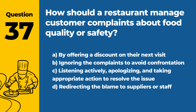Question 37: How should a restaurant manage customer complaints about food quality or safety? a. By offering a discount on their next visit. b. Ignoring the complaints to avoid confrontation. c. Listening actively, apologizing, and taking appropriate action to resolve the issue. d. Redirecting the blame to suppliers or staff. Answer: c. Managing customer complaints about food quality or safety involves actively listening to the customer, apologizing for any issues, and taking appropriate action to address and resolve the concern.